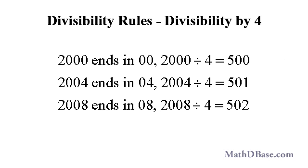If the units and tens digits of a whole number form a number that is divisible by 4, or ends in 00, then the number is divisible by 4.